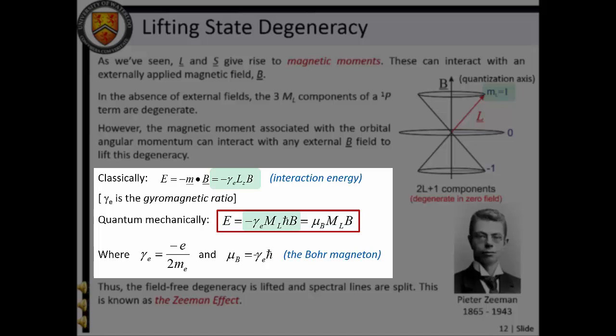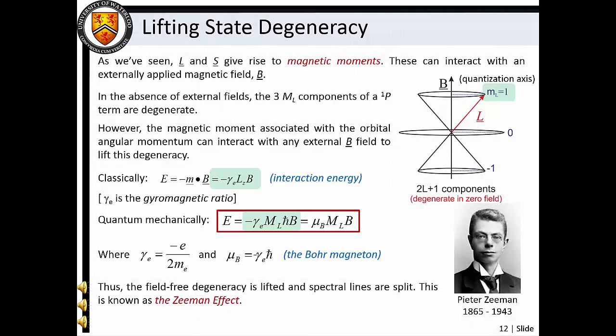By substituting the quantum mechanical projection quantum number description of L_z into the classical description of magnetic moment interaction energies, we see that each quantum state will interact differently with the applied magnetic field. For a singlet P1 level, the M_J = +1 state is raised in energy by an amount −γ_e ℏ B, where B is the magnitude of the external magnetic field. Note that γ_e, the gyromagnetic ratio for an electron, is a negative value. Similarly, the M_J = −1 state is reduced in energy by an amount γ_e ℏ B, whereas the M_J = 0 state energy is unaffected. Thus, the field-free degeneracy is lifted and spectral lines are split by interaction with an external magnetic field. This is known as the Zeeman effect.